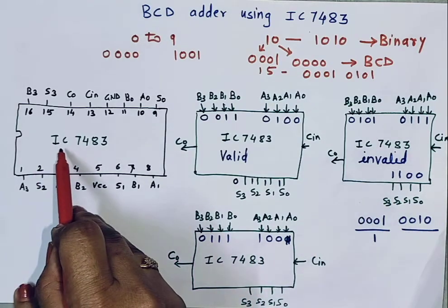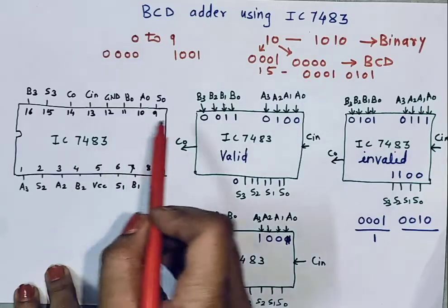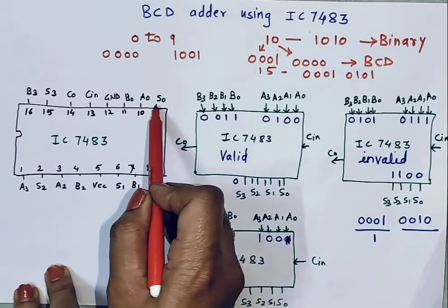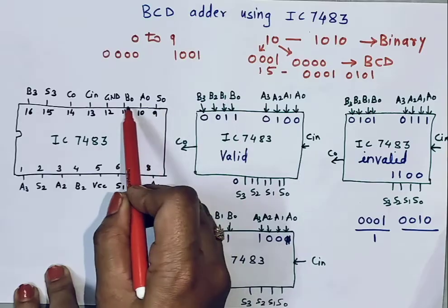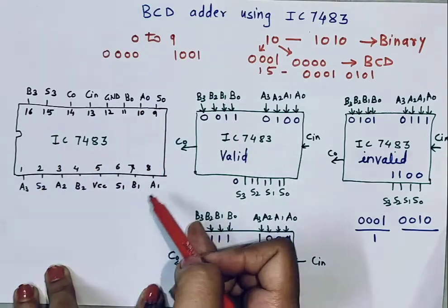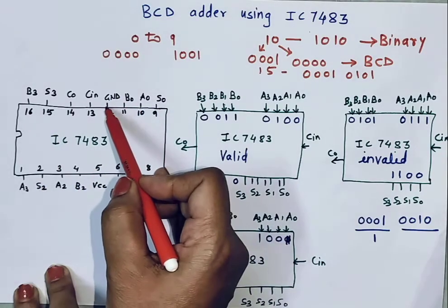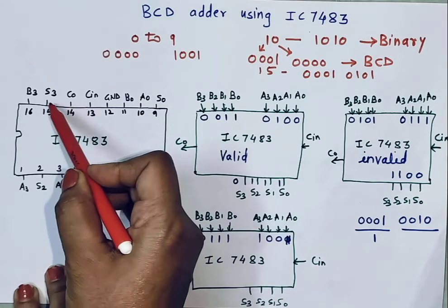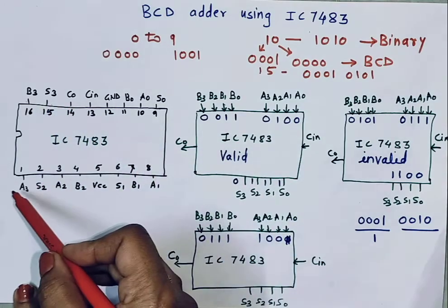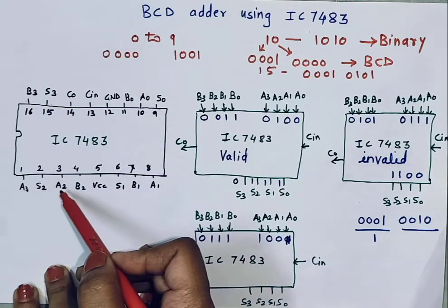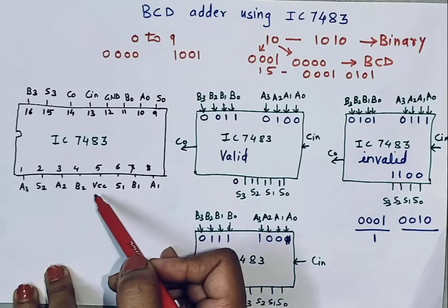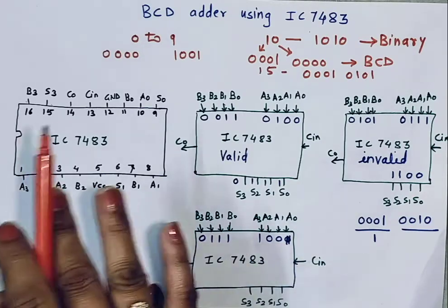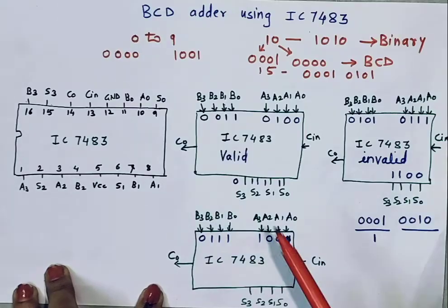Here you can see the pin diagram of IC 7483. A0, B0, S0 are the least significant bits for addition. Then ground pin, carry input, carry output, S3, B3, A3, then A2, B2, S2, VCC, A1, B1, S1. So let's see the conditions.